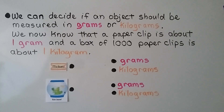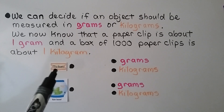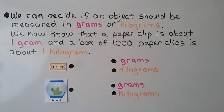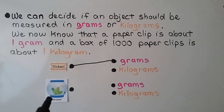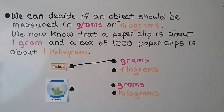We can decide if an object should be measured in grams or kilograms. We know a paper clip is about 1 gram, and a box of 1,000 paper clips is about 1 kilogram. A little movie ticket — its mass is close to a paper clip, so if you said grams, you're right. What about a fishbowl? If you said kilograms, you're right — the fishbowl has more mass, so it would be smarter to measure it in kilograms.